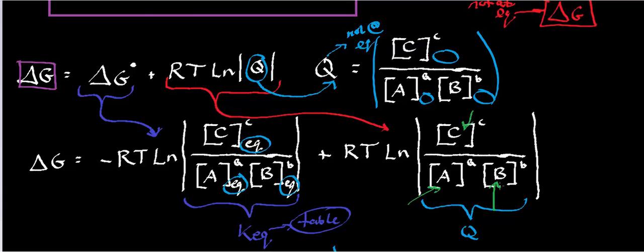Because you're at different points away from equilibrium, these concentrations can vary a lot. C could be 1,000 millimolar or 5,000 millimolar, and A and B can vary just as much. You don't know these concentrations until you measure them, but once you know them at a particular point in time, you can plug them in and calculate delta G not at equilibrium.